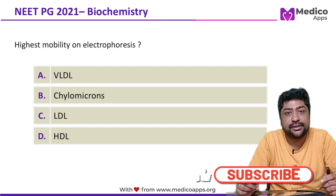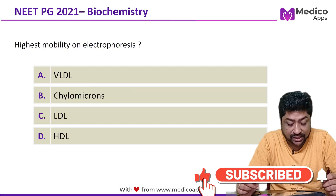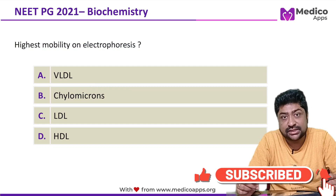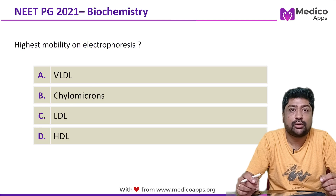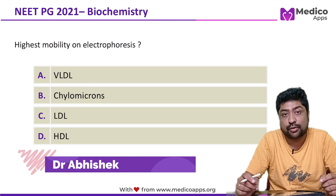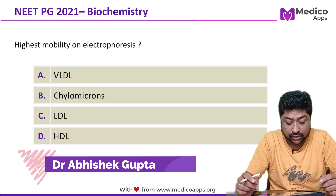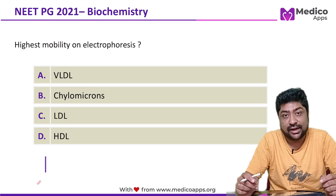This question appeared in NEATPG 2021. The question asks: highest mobility on electrophoresis is seen in which option? The options are VLDL, Chylomicron, LDL, and HDL.